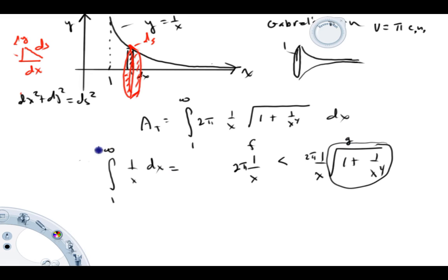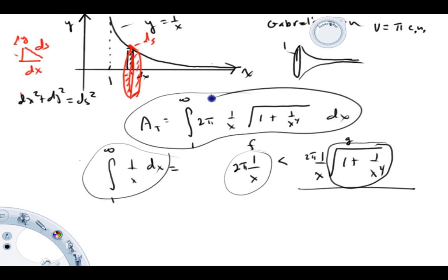Therefore, f of x is less than g of x. And we just showed before that this integral, one over x, from one to infinity, is divergent. This one is bigger than this one. And we just showed that this one, integrated one to infinity, is divergent. That guarantees this function, integrated one to infinity, is divergent. Therefore, this integral has no answer to it. Or we'd say that it has an infinite surface area.